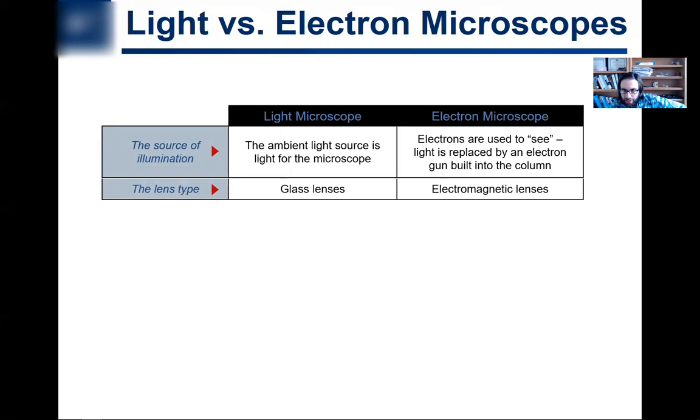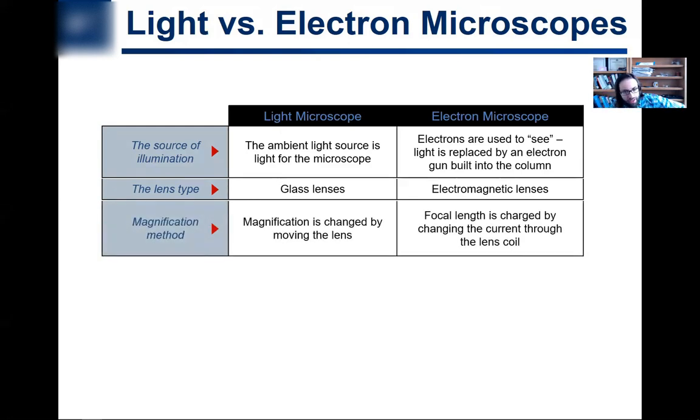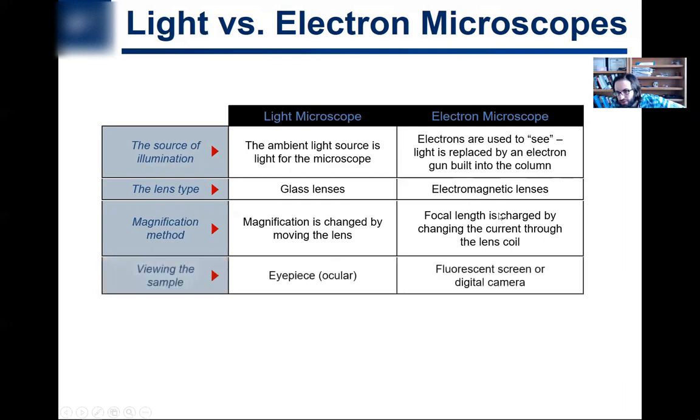In a light microscope, lenses are typically made out of polished glass. In an electron microscope you can't use glass - you have to use an electromagnetic lens, so you're basically bending electrons with magnets. How do you get magnification in a light microscope? Magnification is changed by moving the lens up and down. In an electron microscope the focal length is changed by changing the current in the coils of the magnet electromagnets. Very similar principles, basic principles.